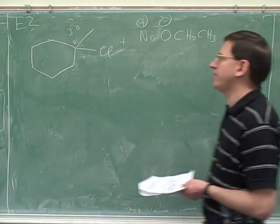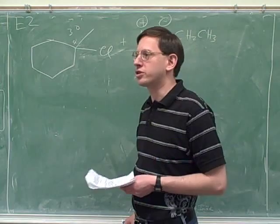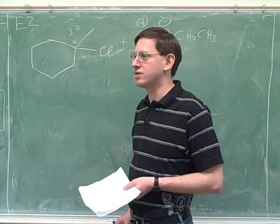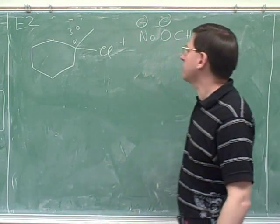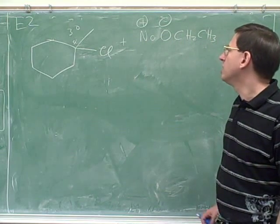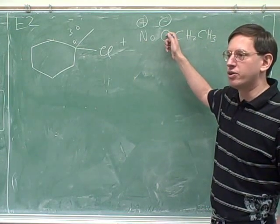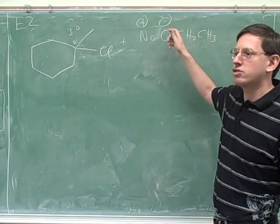If you look at the table, E2 can take place in primary, secondary, or tertiary substrates. Because steric hindrance is not a big obstacle there. So how can we decide if it's E2 or SN1? Well, it's the strength of the nucleophile or base. Because this is a very strong base, it's not going to wait around for the leaving group to leave.